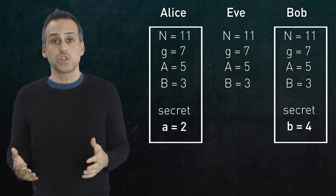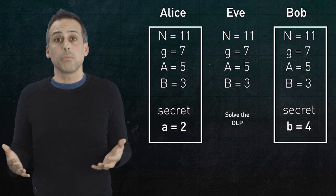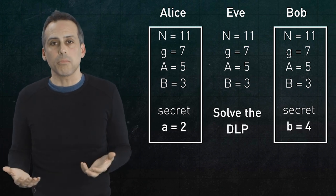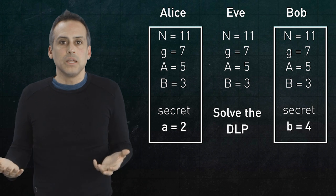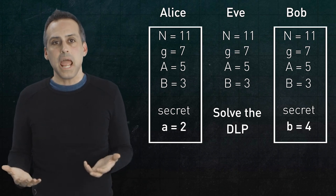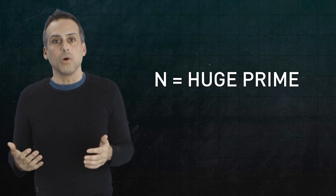Eve's best known method for discovering Alice and Bob's shared key is to solve the DLP for at least one of their secret numbers. Now when n is 11, Eve can make the necessary tables by hand. But if n is a huge prime, Eve's in trouble.